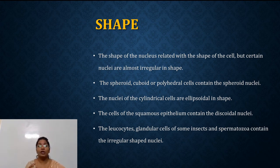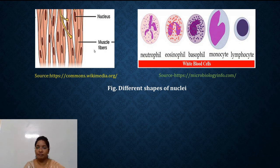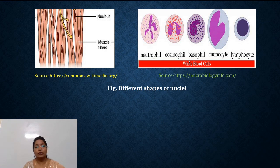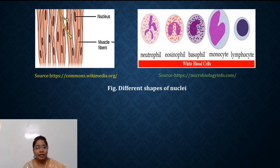This is a figure of muscle fibers — the darkly stained structures are the nuclei and they are elongated in shape. The second figure is of white blood cells, that is leukocytes. We are able to see various types of WBCs such as neutrophils, eosinophils, basophils, monocytes, and lymphocytes, and they are irregular in shape. The shape of nuclei depends on the shape of the cell, whereas certain nuclei are irregular in shape.